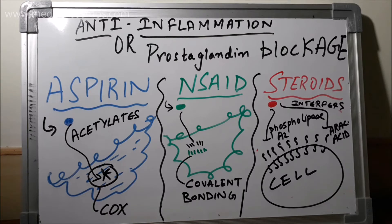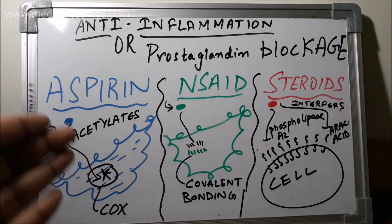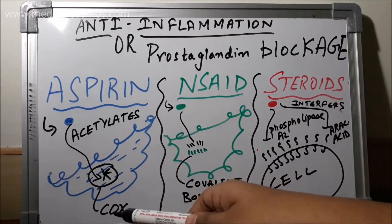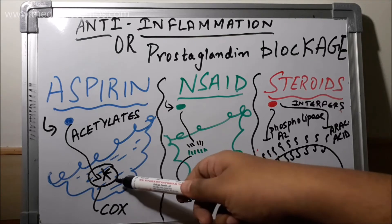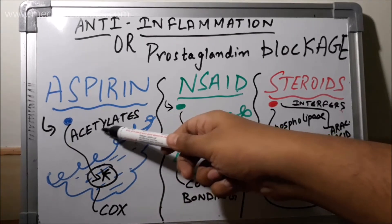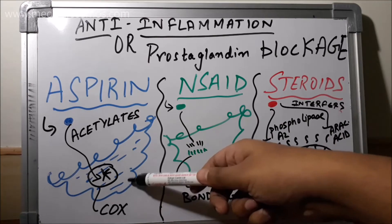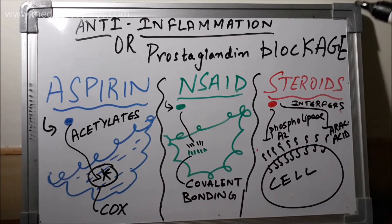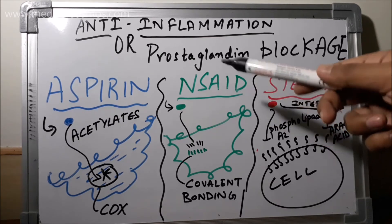How does aspirin act? As we have already discussed, aspirin acetylates the COX enzyme — that is, the cyclooxygenase enzyme. We can see this as the acetylation of COX taking place, which finally inhibits prostaglandin production, thereby inhibiting the rise in temperature and fever.